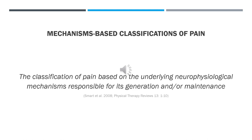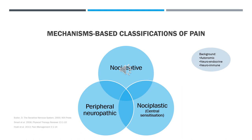In response to the limitations of the biomedical model of pain, some have advocated mechanisms based classifications of pain — that is, the classification of pain based on the underlying neurophysiological mechanisms responsible for its generation and/or maintenance. Three main mechanisms based classifications have been described in relation to musculoskeletal presentations: nociceptive pain, peripheral neuropathic pain, and nociplastic pain, formally and commonly referred to as central sensitization.